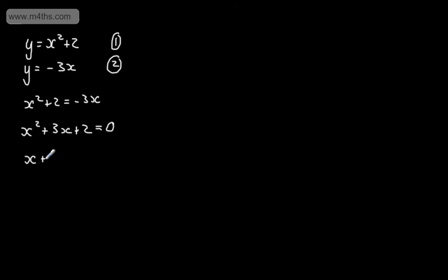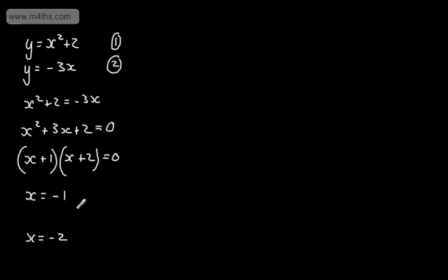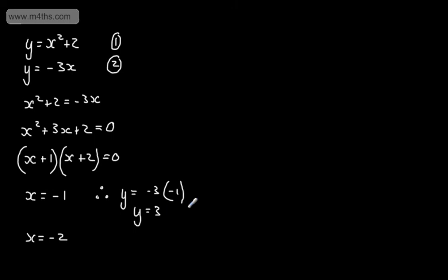This will factor: we have (x plus 1)(x plus 2) equals 0. So x equals minus 1 or x equals minus 2. Taking the first value, we substitute through the linear equation: y equals minus 3 times minus 1, which gives y equals 3. So when x equals minus 1, y equals 3.